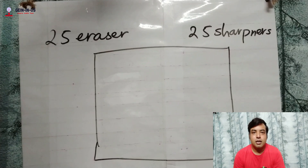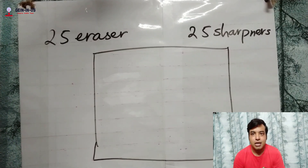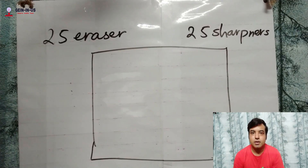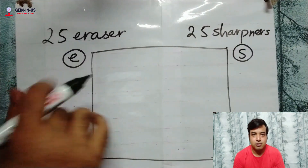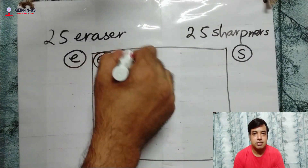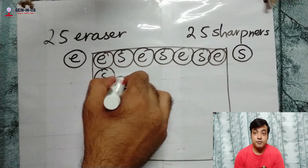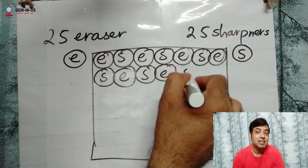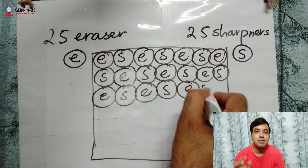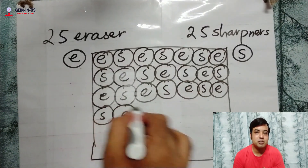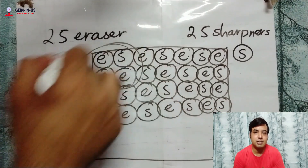They will mix in a specific way. I am mixing the erasers and sharpeners together — E for eraser and S for sharpener. Now you can see how they are mixed. If you take out any part of this box, you will find that both eraser and sharpener come together in a definite proportion.